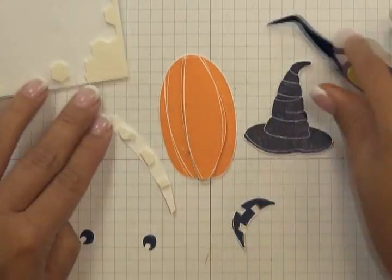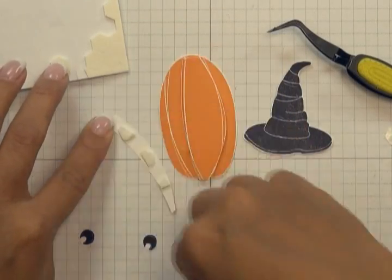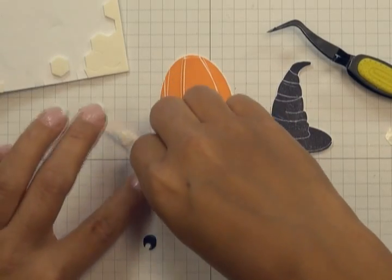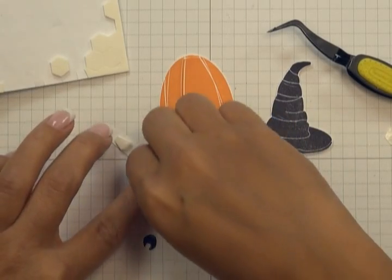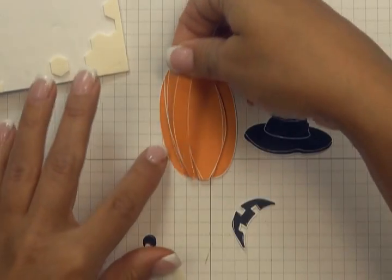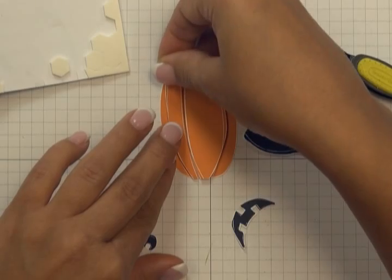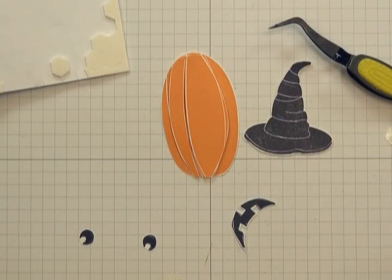So now I'm going to peel the backing off of those pieces and I'm going to attach this piece like so.